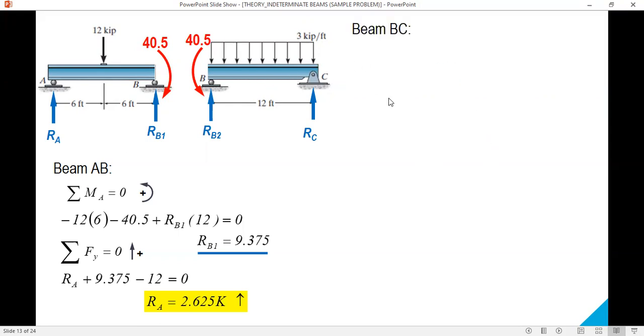For the uniform load, the resultant is 3 times 12 acting at the centroid, distance is 6, plus 40.5, and then RB2 is negative clockwise, negative RB2 times distance 12. Add these two terms, transpose negative, divide by negative 12, and RB2 is equal to 21.375. To solve for RC, we sum up forces in the vertical: RC plus RB2 minus the uniform load 3 times 12.